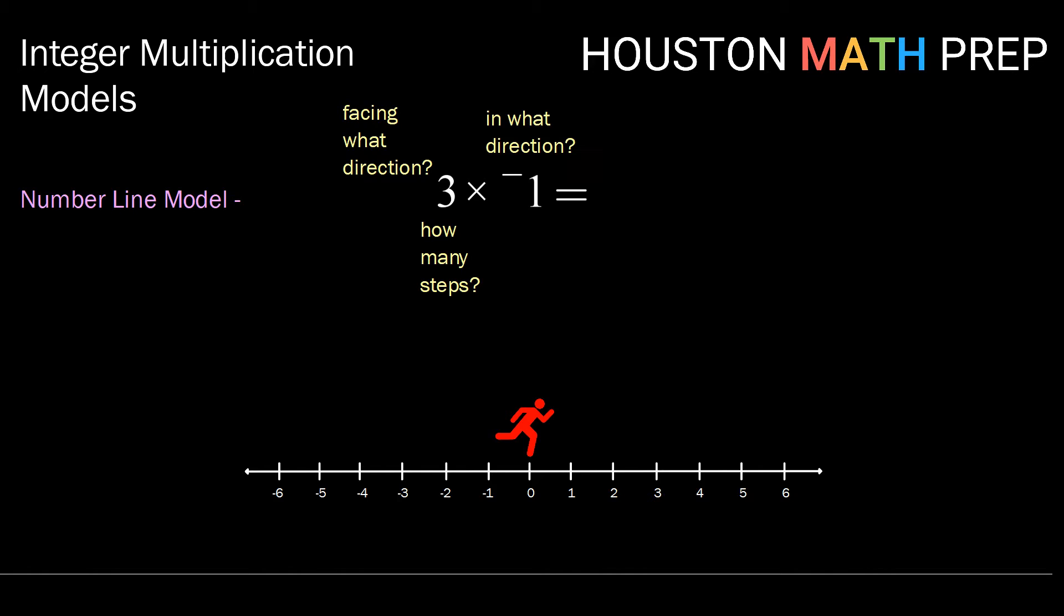The next number tells us in what direction we're going to take those steps. Because we have a negative, we're going to be taking those in the negative direction, and the number there tells us how large those steps are going to be.